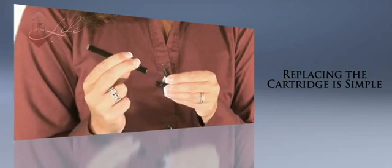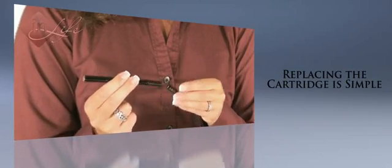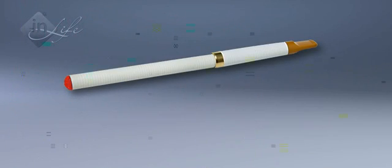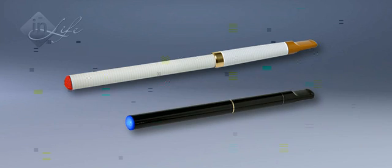Changing cartridges is done simply by pulling out the used cartridge and replacing it with a new one. A single cartridge for the Elite model is the equivalent to approximately one package of cigarettes. A cartridge for the Prestige model is slightly less than a package of cigarettes.